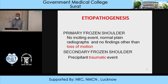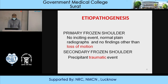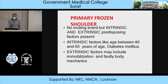Regarding pathogenesis, it is mainly of two types: primary frozen shoulder and secondary frozen shoulder. In primary frozen shoulder, there will be no inciting event, normal plain radiograph, and no finding other than loss of motion. In secondary frozen shoulder, there is a precipitant traumatic event. Primary frozen shoulder has intrinsic factors like age between 40 and 60 years, and patients will commonly be suffering from diabetes mellitus. Extrinsic factors may include immobilization and faulty body mechanics.